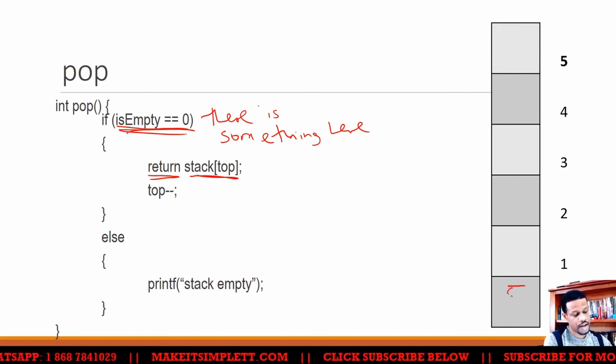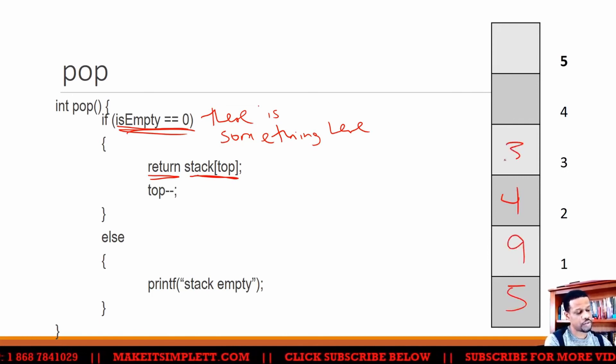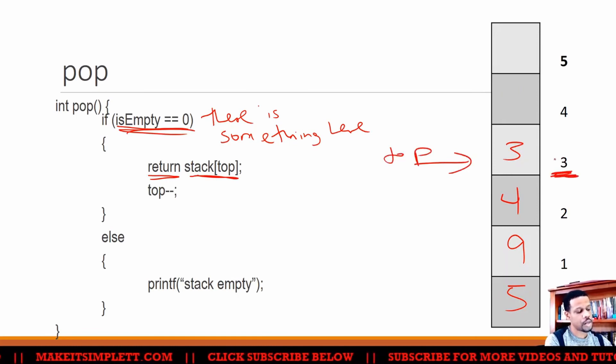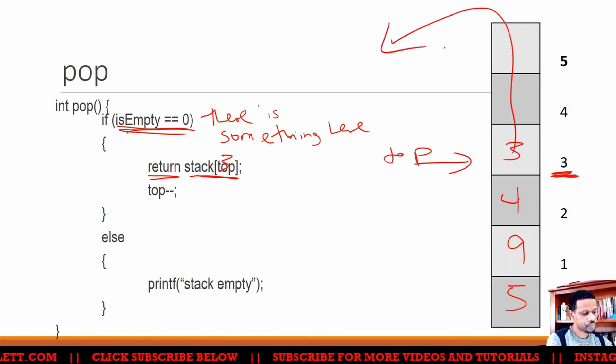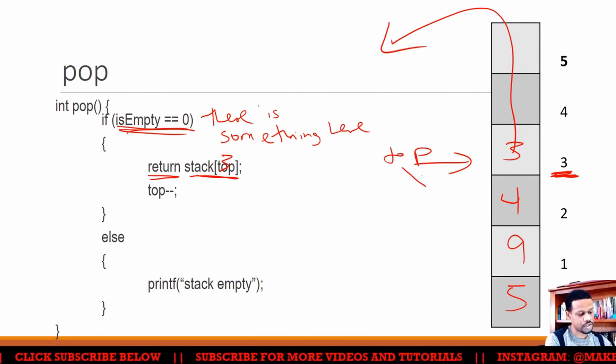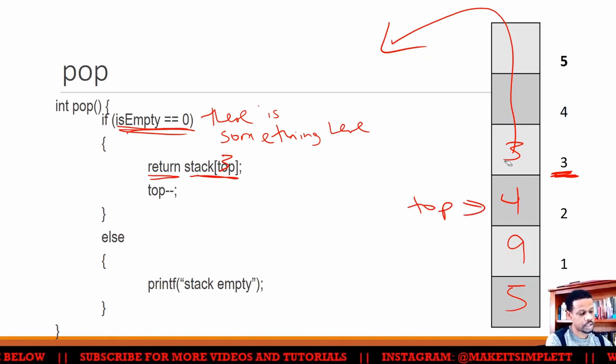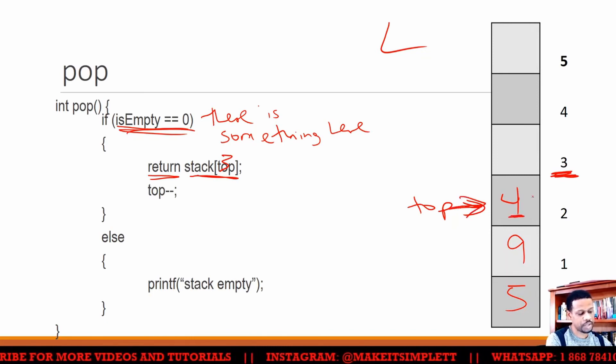So let's say this had numbers five, nine, four, and three, and top was pointing to location three. What you're going to do is you're going to return what is at location three, which is take the three out and return it to wherever it is going to go and then go top minus minus. So now the top is going to be here. So what's going to happen is that the top was pointing up there, but it's no longer pointing there because we took that three out. So now the top is now there. So the next thing that pops will be that four.